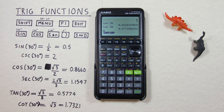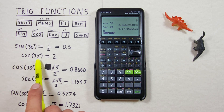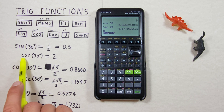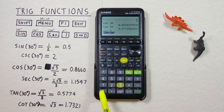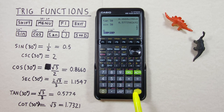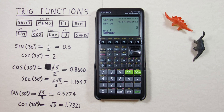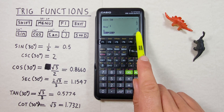We can also find the cosecant, secant or cotangent with this calculator. To do that we use the inverse of the corresponding function. For example, if we want to find the cosecant of 30 degrees we use the inverse of sine. So we start with sine of 30, hit EXE to get one half, and then press shift and right bracket — the shift function being inverse — to get the inverse of the previous answer. We hit EXE and see we get a result of 2, which is correct.